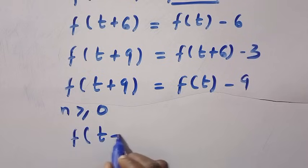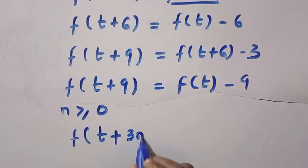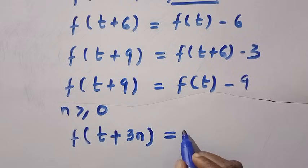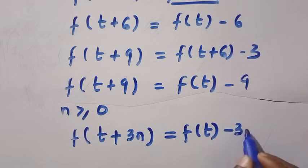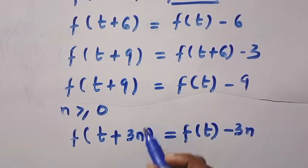So the general form of this recursive is given as f of t plus 3n. This equals f of t minus 3n. So here is the general formula for this pattern.